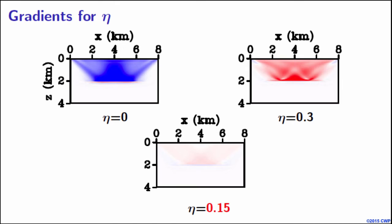There will be some residual. As we saw yesterday, the DSO objective function for eta is biased toward lower eta, and that's why the gradient tries to push us a little bit toward lower values.